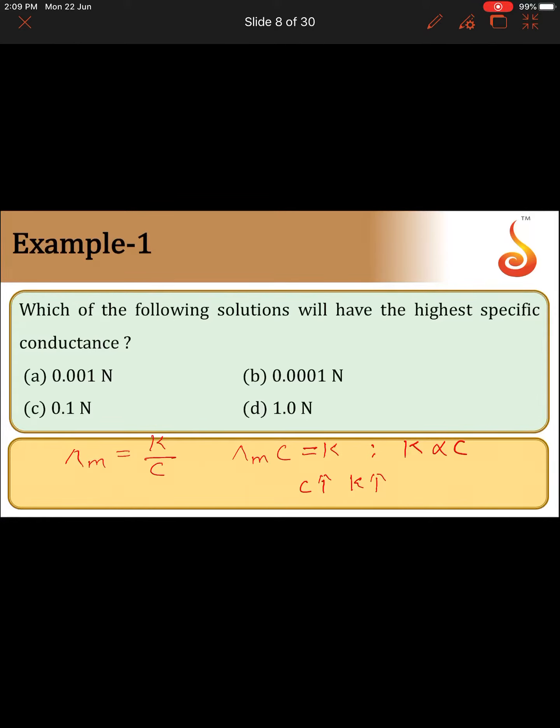The one having the higher concentration is one normal solution. If the concentration is more, specific conductance is also more. So the solution which will have highest specific conductance is one normal solution.